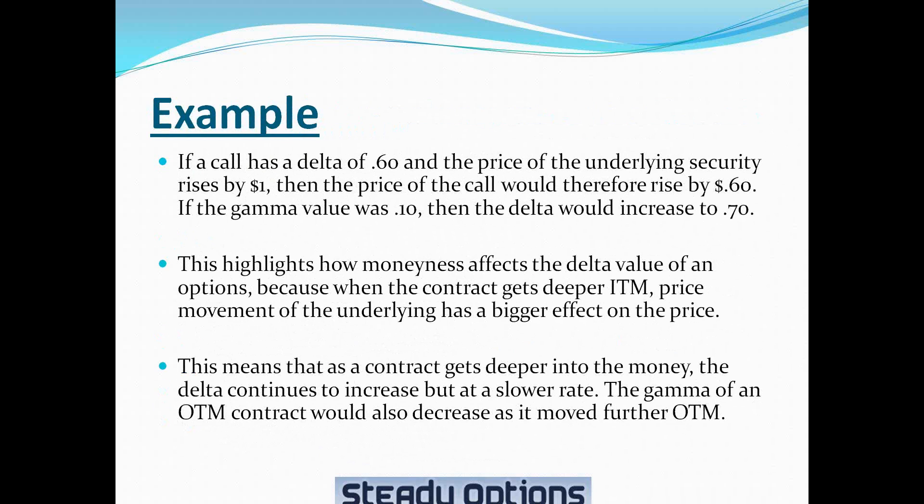Let's take a look at an example. Let's say you have a call with a delta of 0.60. If the price of the underlying security rises by $1, then the price of the call would rise by $0.60. If the gamma value was 0.10, then the delta would increase to 0.70. This means that another dollar rise in the price of the underlying security would result in the option price increasing by $0.70, and the delta would also increase again in accordance with the gamma.